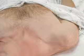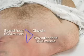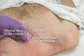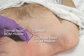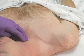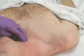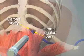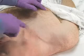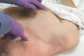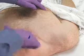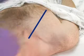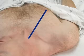Identify the triangle formed by the sternal and clavicular heads of the sternocleidomastoid muscle and the clavicle. Determine the location of the carotid pulse — the path of the vein runs just lateral to the carotid artery. The needle will enter the skin at the apex of this triangle just lateral to the carotid pulse and will be aimed toward the ipsilateral nipple.